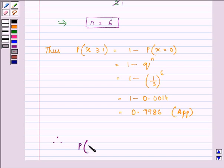So probability of X is greater than or equal to 1 is 0.9986 approximately. This ends the session. Hope you understood it well and enjoyed it too. Have a nice day ahead.